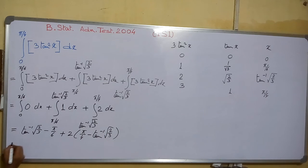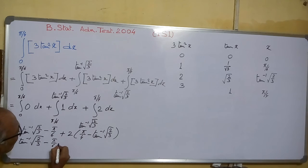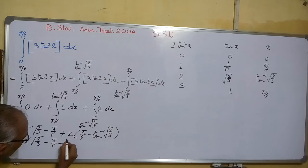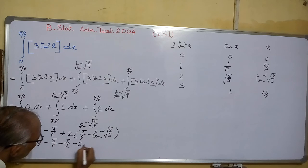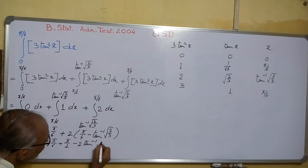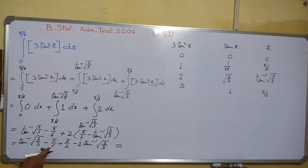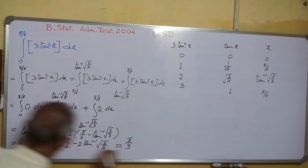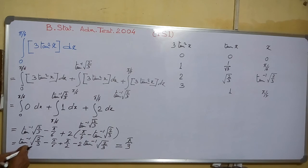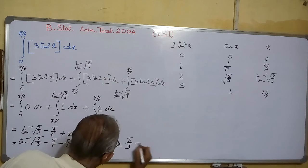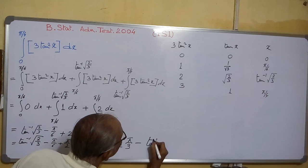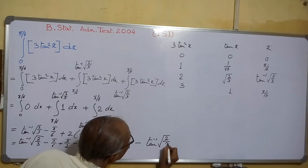See this one. This is equals to, now see, π/2 minus π/6, that is π/3. If you are subtracting these two, it is coming π/3. And this one minus this one is coming minus tan⁻¹(√(2/3)). This is your solution.